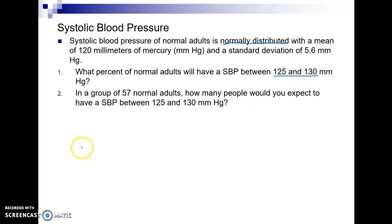So because it's normally distributed I'm going to start my problem by drawing myself a normal curve. So there's my bell shaped curve. I put my horizontal axis. I'm going to divide this exactly in half. In the middle is where I put the mean and we were told the mean here is 120.